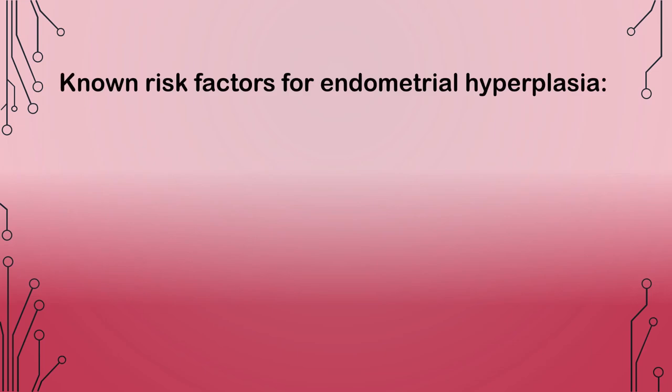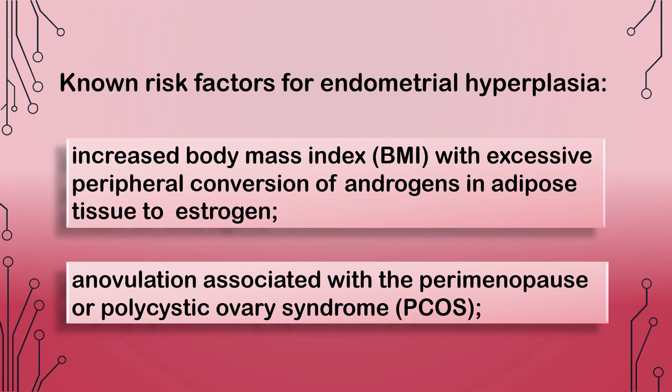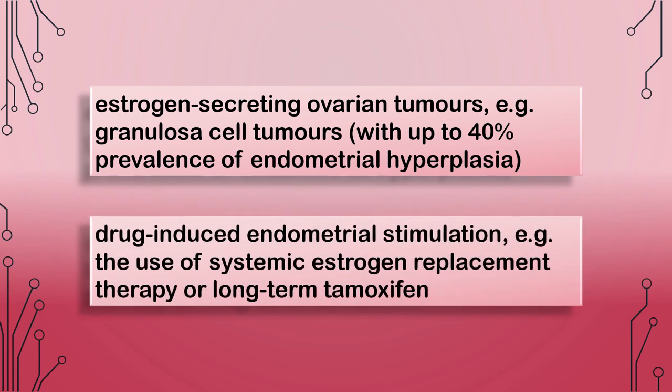Known risk factors include: increased body mass index (BMI) with excessive peripheral conversion of androgens in adipose tissue to estrogen; anovulation associated with the perimenopause or polycystic ovary syndrome (PCOS); estrogen-secreting ovarian tumors such as granulosa cell tumors with up to 40% prevalence of endometrial hyperplasia; and drug-induced endometrial stimulation, for example the use of systemic estrogen replacement therapy or long-term tamoxifen.